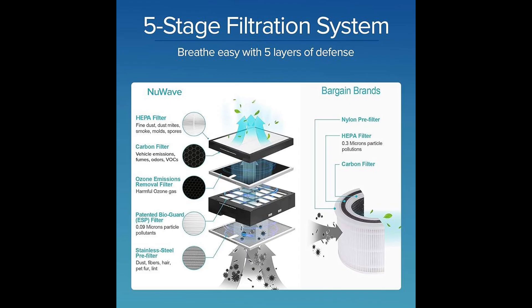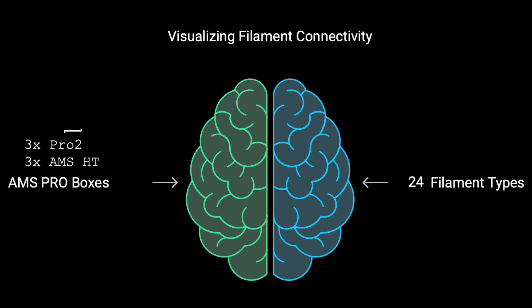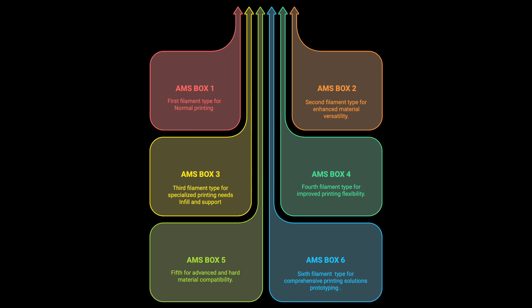But here's where the AMS2 Pro really shines. Leaked specs tell us the H2D supports up to 4 AMS2 Pro and 8 AMS HT units, giving you access to 24 filaments and, theoretically, 25 colors if configured correctly.